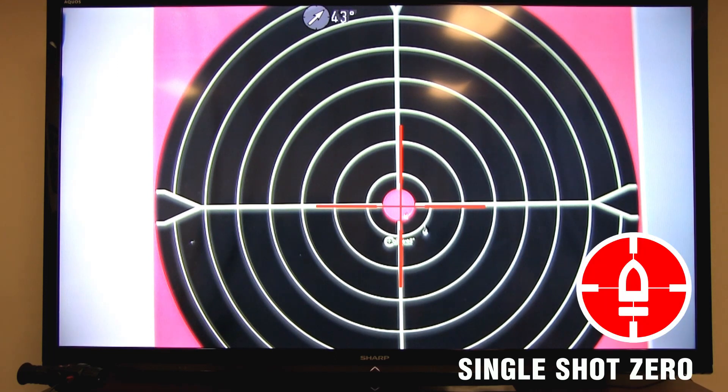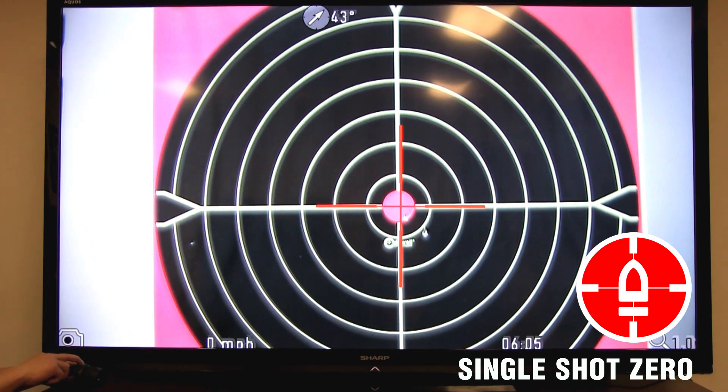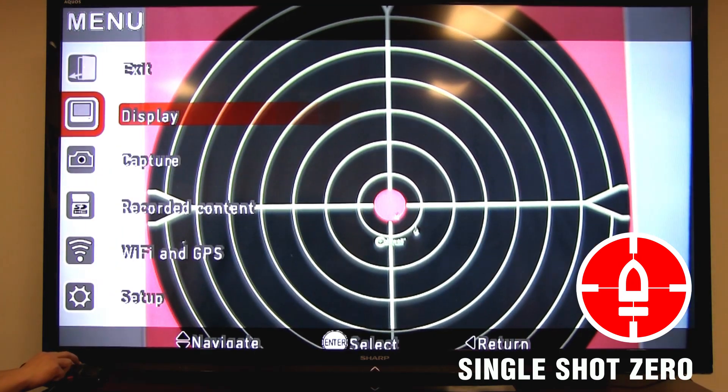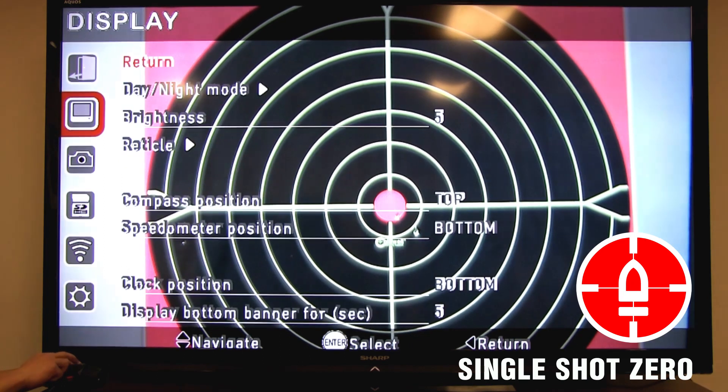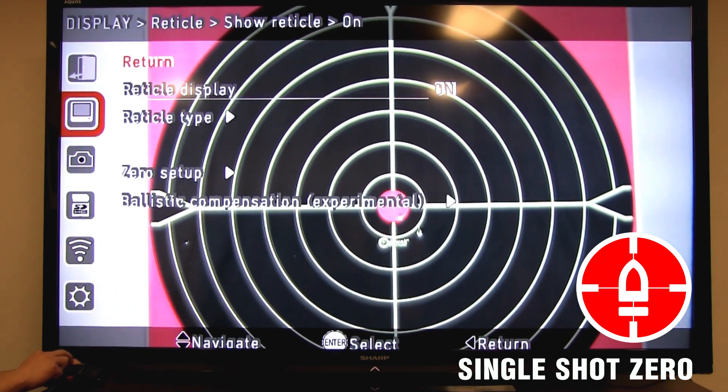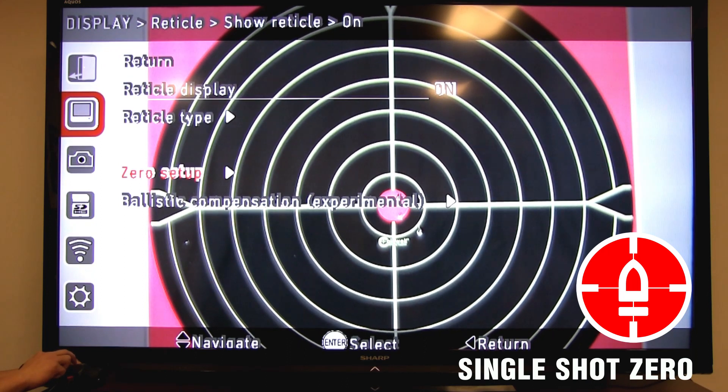If your new zero is not exactly where you want it, for whatever reason, repeat the exact same steps you did by pressing enter twice and selecting the menu icon. Select the display menu. Move down to the reticle menu. And move down to the zero setup menu.